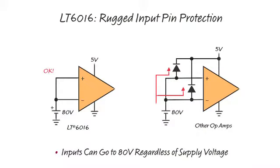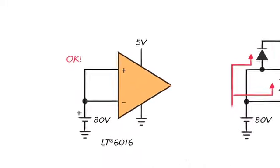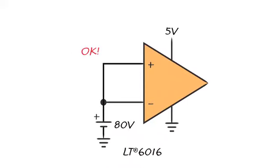First, let's take a look at the input protection of the LT6016. You can actually take the input pins of this op amp to as high as 80 volts above the negative supply regardless of what voltage is applied to the positive supply. For example, the op amp could be powered from 0 and 5 volts. 80 volts can be applied to the inputs and that's perfectly okay.